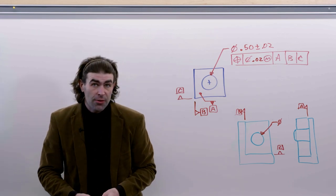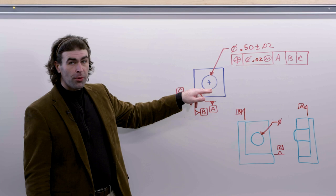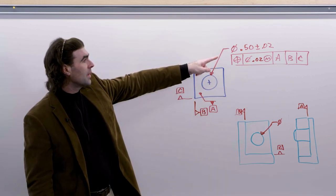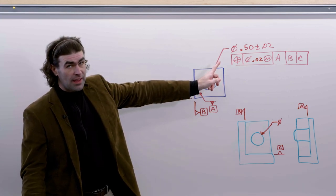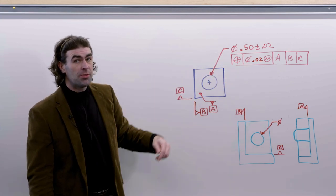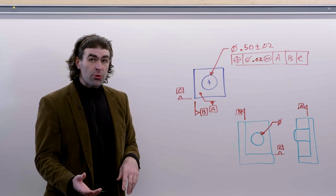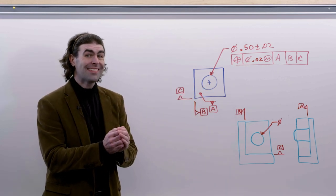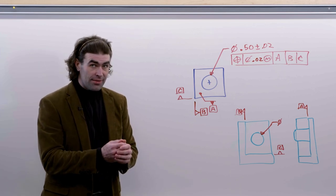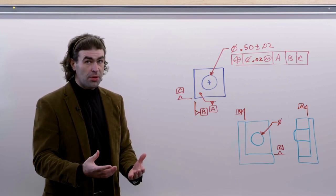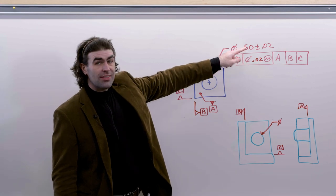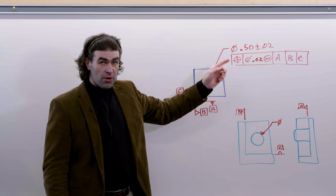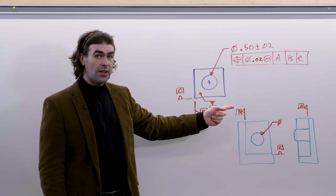In the example I got on the board here, very simple block with a hole in it, a half inch plus or minus twenty thousandths tolerance, a twenty thousandths diameter at MMC. So the virtual condition for this hole is going to be the MMC size minus the position tolerance applied. The MMC size is 0.48, that tolerance is twenty thousandths, so our virtual condition is 0.46.